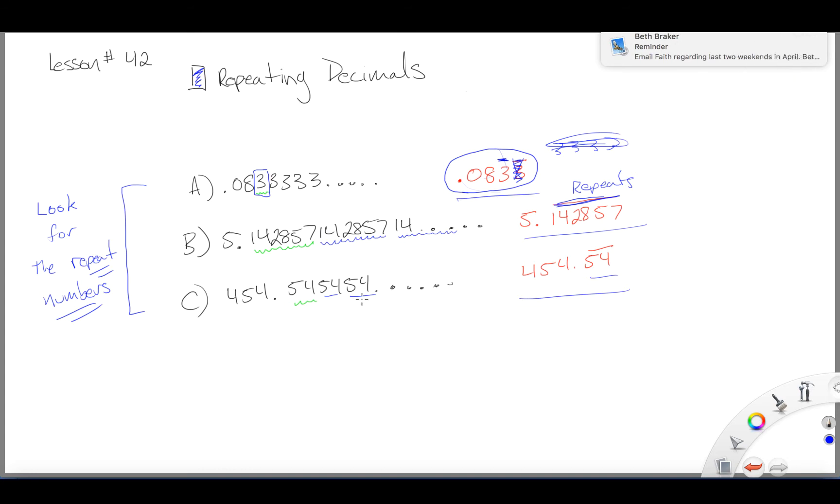Alright, so let's go to example 2, and it says round each number to 5 decimal places. So they only give us a few decimal places, like 3, but they show it's repeating.